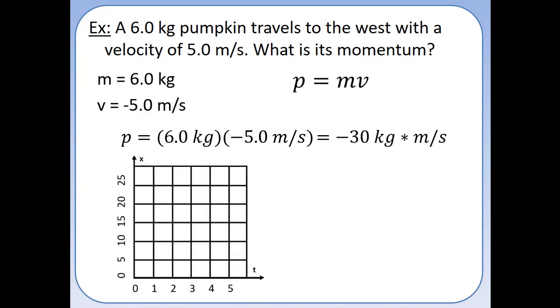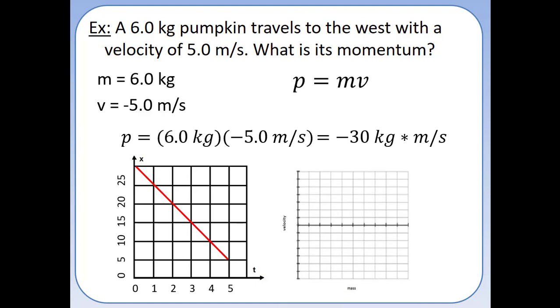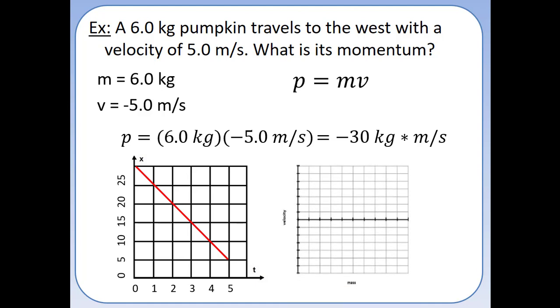We've been representing motion using a position-time graph, and we can do that here as well. For this pumpkin moving at negative 5 m/s, it would be a straight line with a negative slope. But we also have a new representation: a mass-velocity graph that shows us the momentum of that particular object.